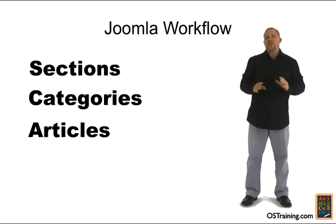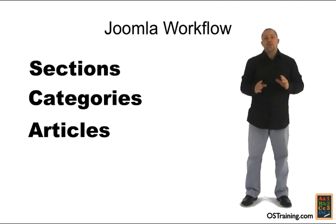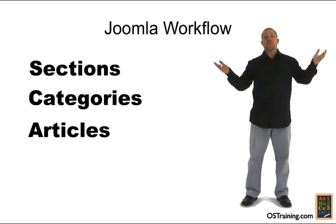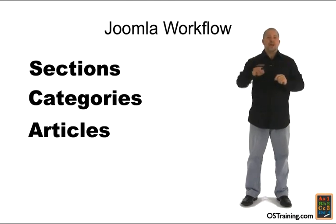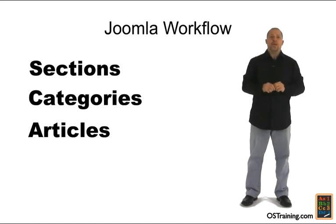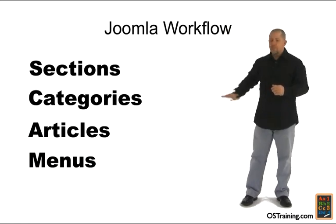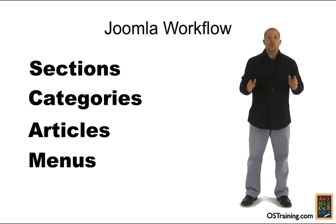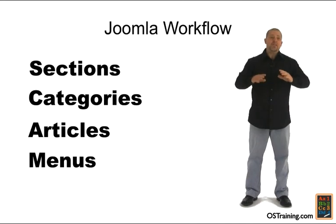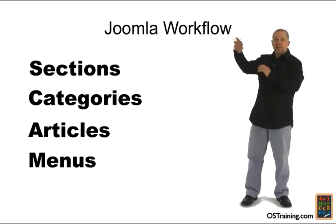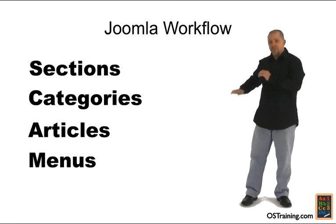The last kind of article you can have is uncategorized. An uncategorized article is one that just doesn't fit into a category. The trick there is you have to have the fourth part of the Joomla workflow in order to get to that article, and that's menu. So the Joomla workflow is: Sections, Categories, Articles, Menus. I know in our course we went through menus first because it appears first in the menu structure, but in reality it's the last part of the Joomla workflow. Sections, Categories, Articles, Menus — that's the Joomla workflow.